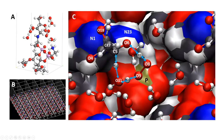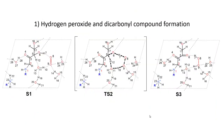This slide shows the formation of hydrogen peroxide and generation of the dicarbonyl intermediate starting from the Amadori product. This reaction involves several proton transfers from atoms of the Amadori product. Shown here is the step of the reaction starting from the reactant — including the Amadori product, oxygen molecules, and several water molecules — along with the transition state and the product of the first step: the dicarbonyl intermediate and hydrogen peroxide molecules.